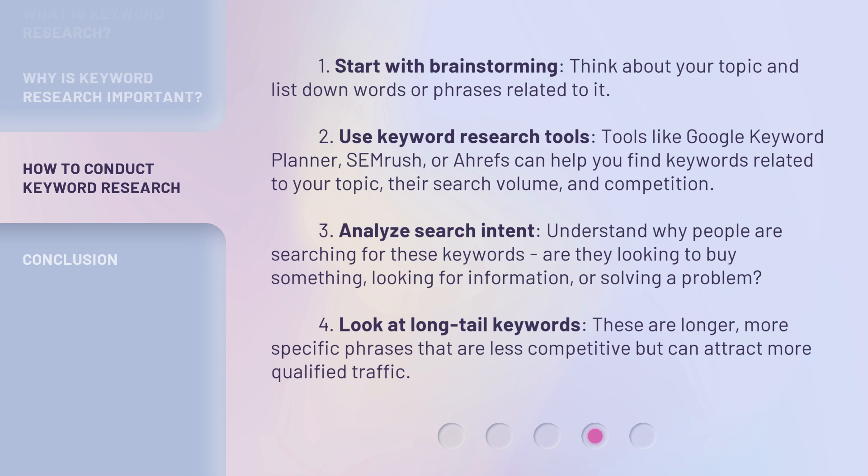Step 3: Analyze search intent. Understand why people are searching for these keywords. Are they looking to buy something, looking for information, or solving a problem? Step 4: Look at long-tail keywords. These are longer, more specific phrases that are less competitive but can attract more qualified traffic.